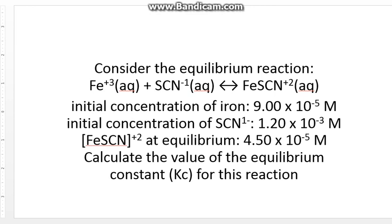We essentially have this iron 3 plus molecule, or ion to be technical, with a SCN molecule becoming FeSCN, which if you remember from one of our labs is a colored ion. We're given our initial concentration of the iron ion and the initial concentration of the SCN ion, and we are told what our FeSCN is at equilibrium. So from this we have to calculate the Kc constant.